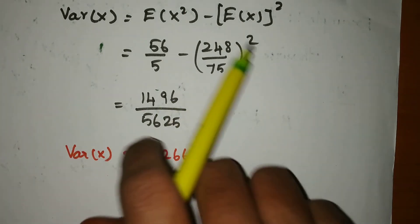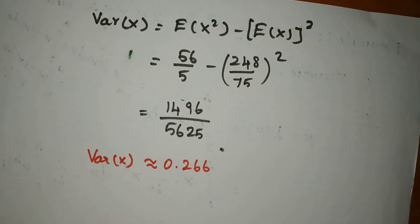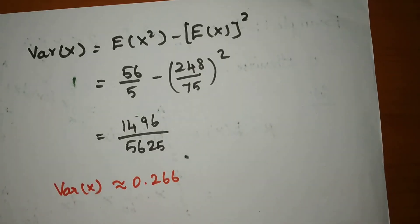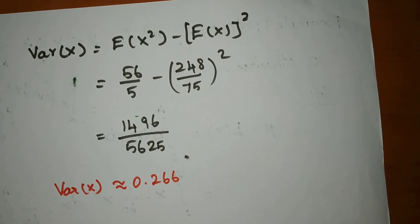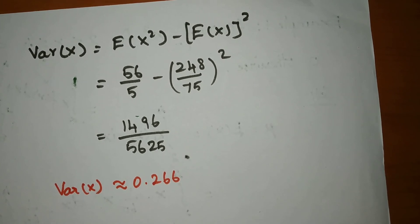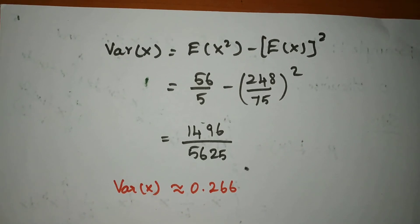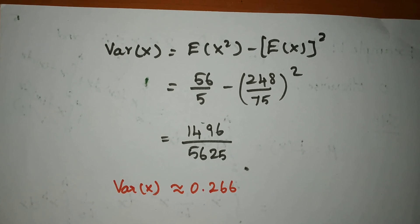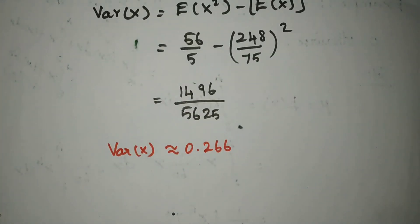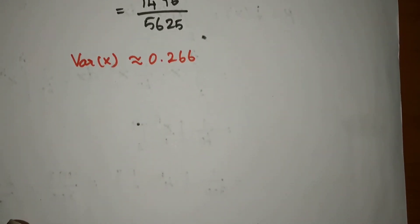If you have a point value option, use the approximate decimal values, subtract them, and select the correct answer. In objective-type portions, you can use these decimal approximations to solve quickly in your mind. The variance of x has an approximate value of 0.266 — that is the answer.